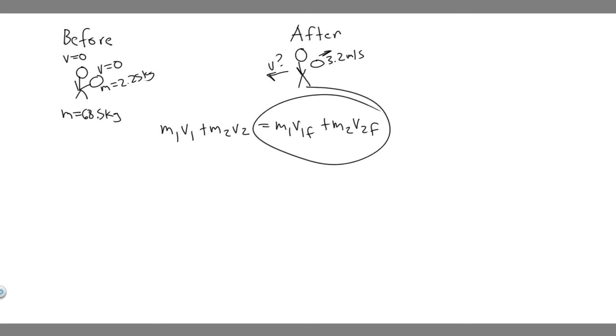So think about, first of all, what we want to do is label this. So I'm going to say the ones, so M1 and V1 are going to be the astronaut, and two is going to be the tool. Just keep that in mind.